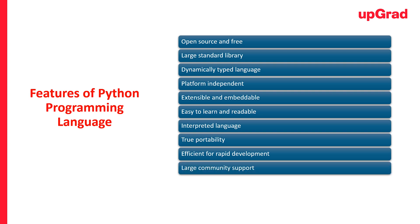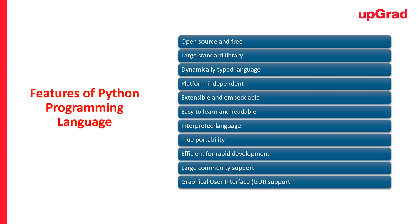At number ten is large community support. Python enjoys a thriving community featuring active participation on platforms like Stack Overflow and Meetup. Developers can readily seek assistance and access a wealth of answered Python-related questions. At number eleven, we have graphical user interface. Python extends its utility to GUI development — developers can harness libraries like Tkinter, PyQt, WXPython, or PySide to craft interactive graphical interfaces, bridging the gap between code and user experience.